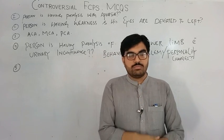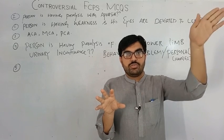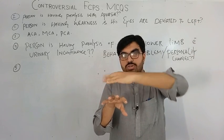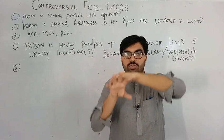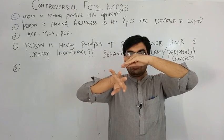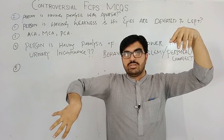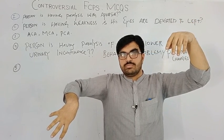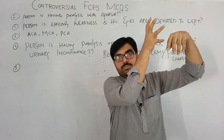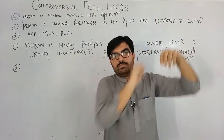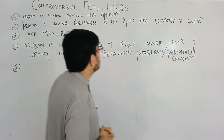Regarding the superior oblique, as we already studied, it goes toward the trochlea and attaches toward the posterior lateral portion, causing intorsion and moving the eye laterally and downward. When it is paralyzed, the opposite action occurs — the eye moves upward.